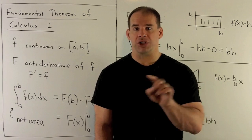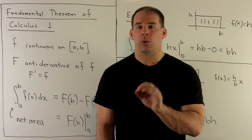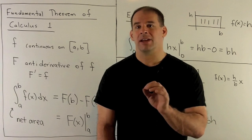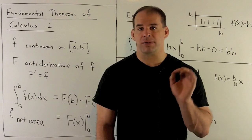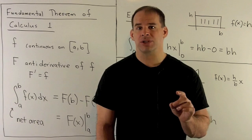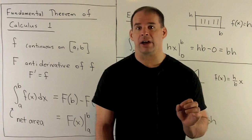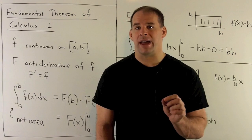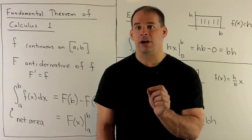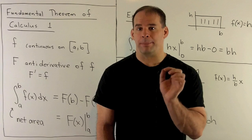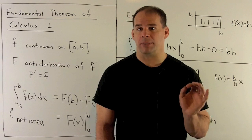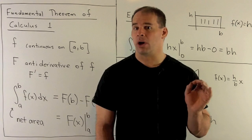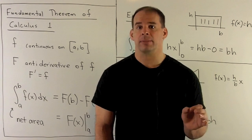We take our region and fill it up with rectangles, take the sum of the areas of those rectangles, and we get an approximation for the area. Then we let the rectangles get finer and finer, we get better and better approximations, and if the limit exists, we call that the area.